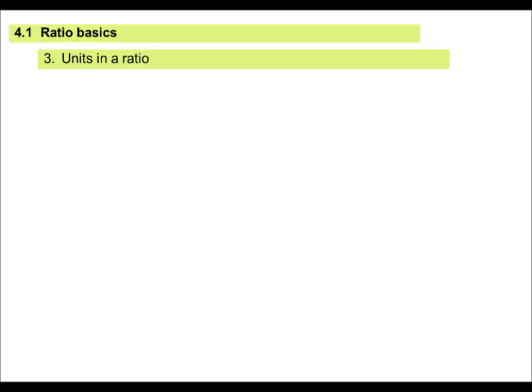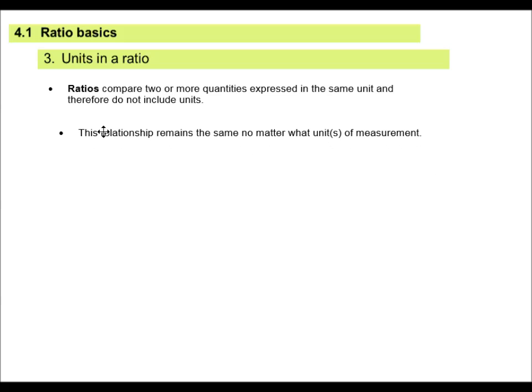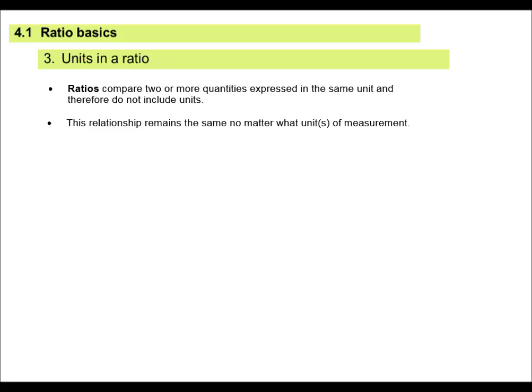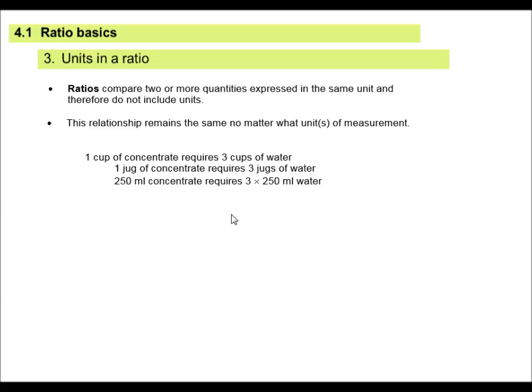Units in a ratio. Ratios compare two or more quantities expressed in the same unit, and therefore do not include the units. A ratio is a relationship, and it remains the same no matter what units of measurement. So let's have a look at an example. If I have one cup of concentrate, I require three cups of water. So I have cups to cups, jugs to jugs. If I have 250 milliliters of concentrate, I am required to have three times 250 milliliters of water.